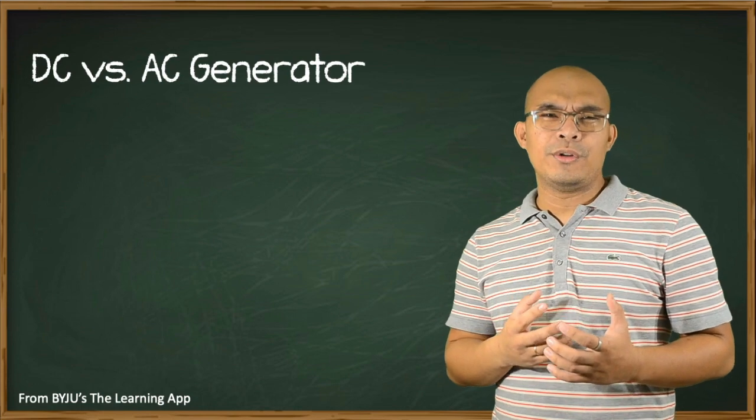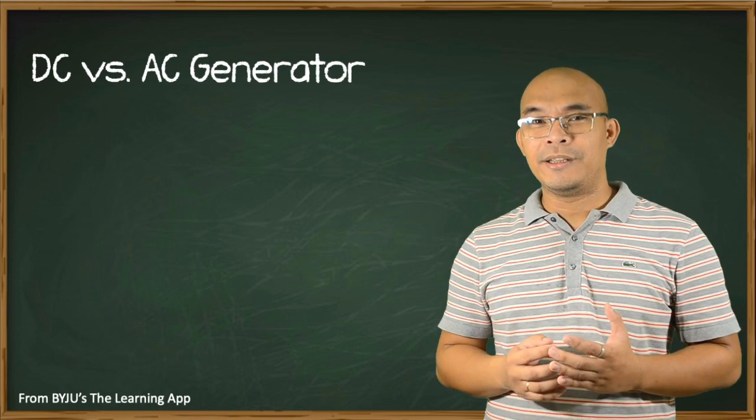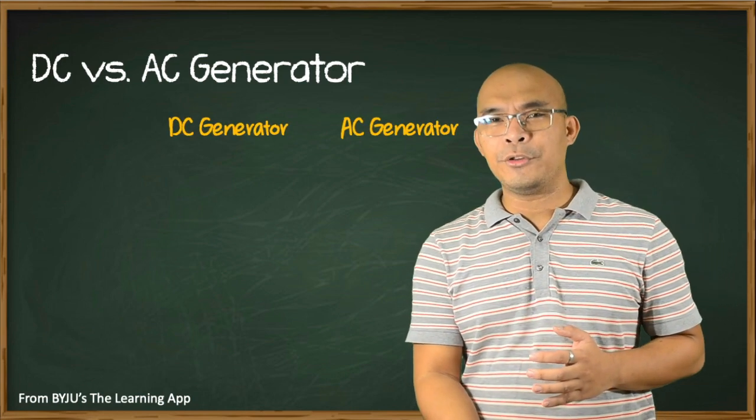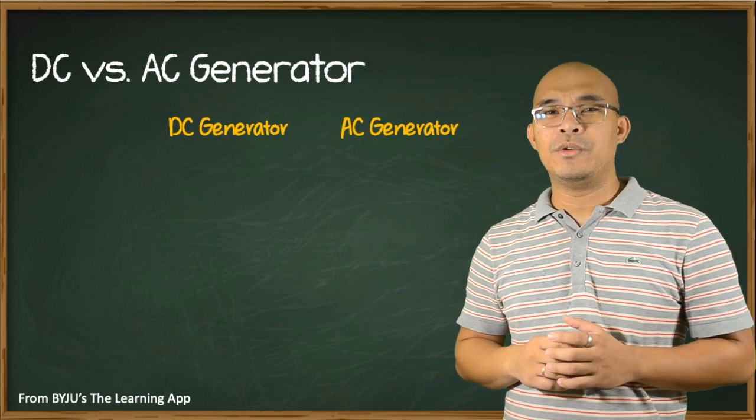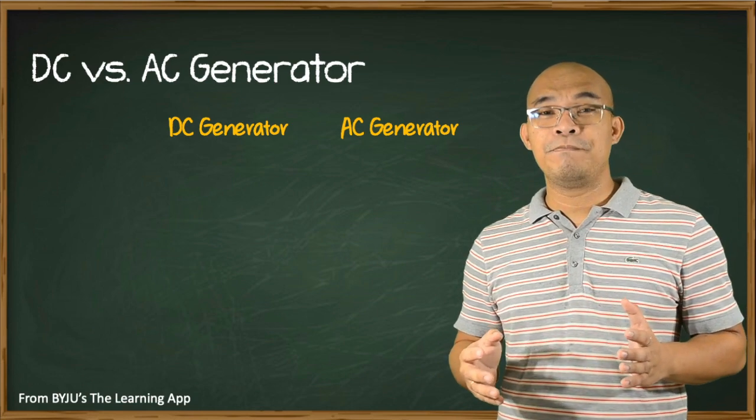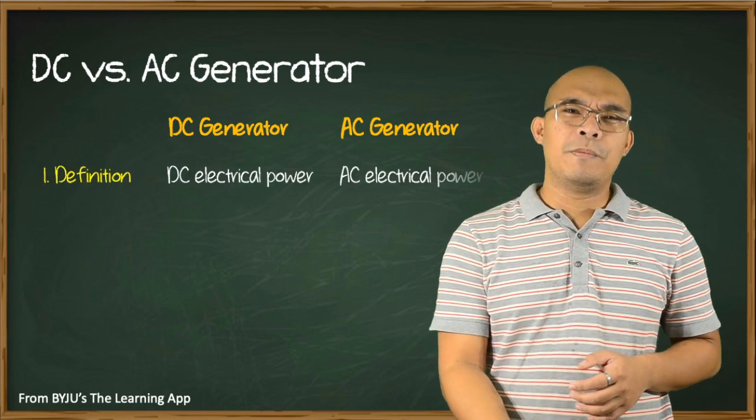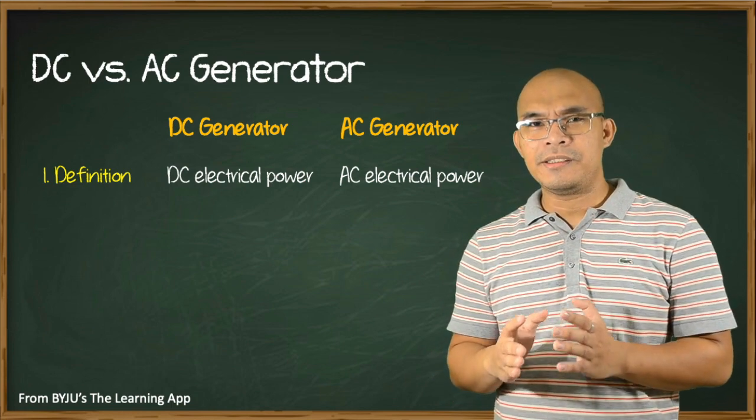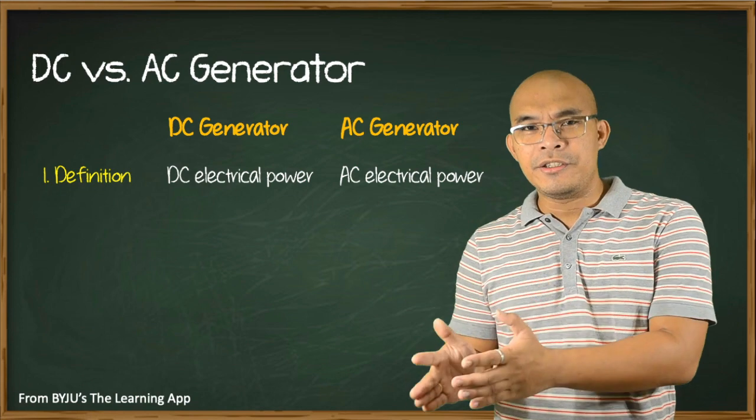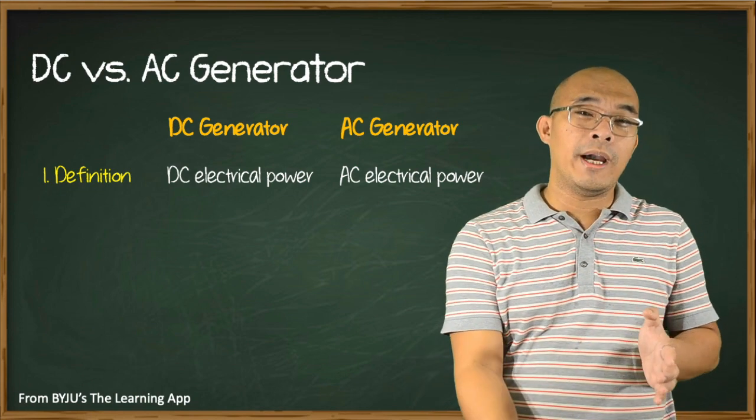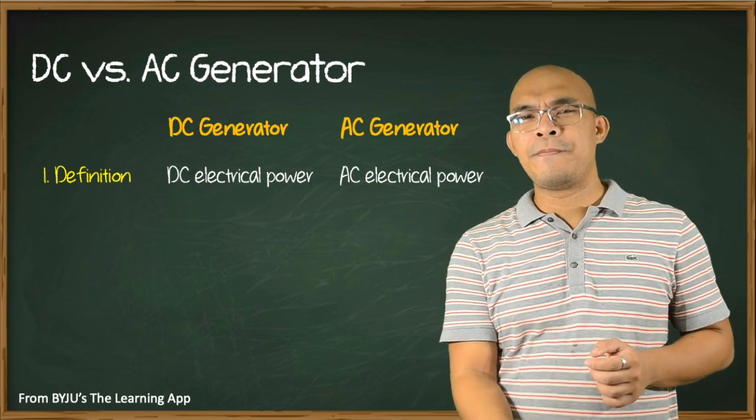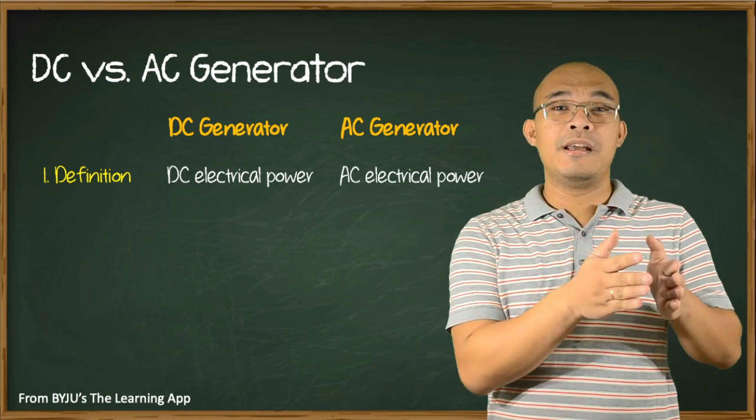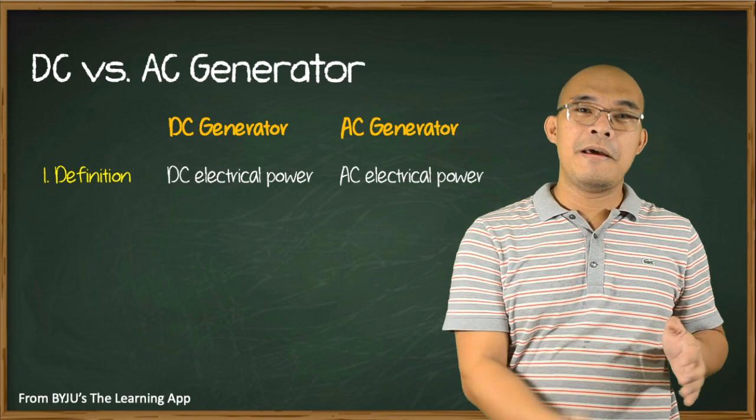Before we discuss thoroughly about AC generators or alternators, let us first differentiate it from a DC generator. This tabular comparison is credited to BYJU'S The Learning App. By definition, a DC generator is a mechanical device that converts mechanical energy to DC electrical power, while an AC generator is a mechanical device that converts mechanical energy into AC electrical power.